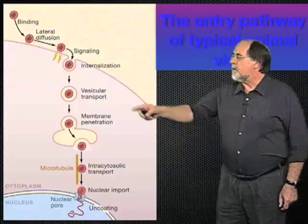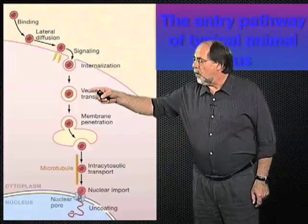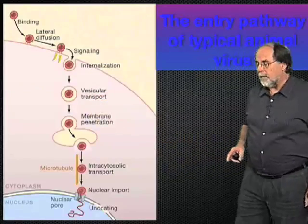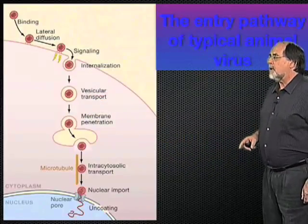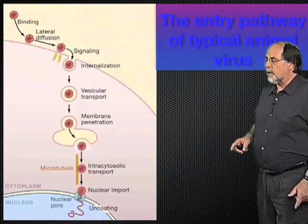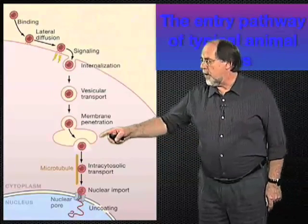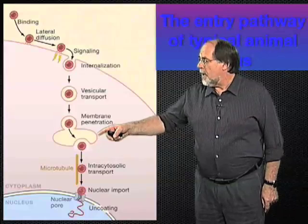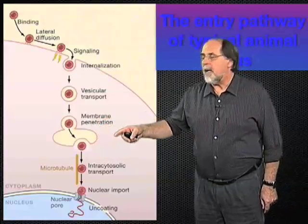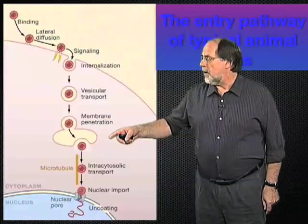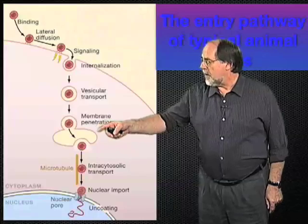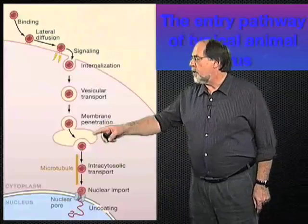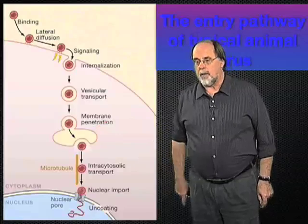The endocytic vesicles that are formed carry the virus into a secondary organelle inside the cell. In the case of Semliki Forest virus, this would be an early endosome, and here the penetration of the capsid into the cytosol is triggered by the conditions in this compartment.